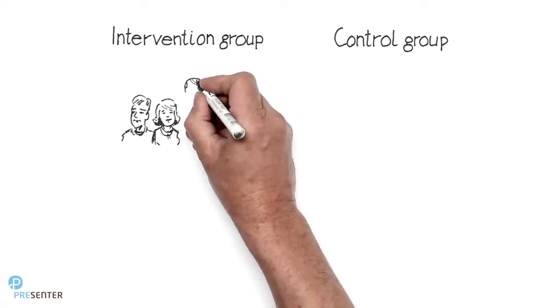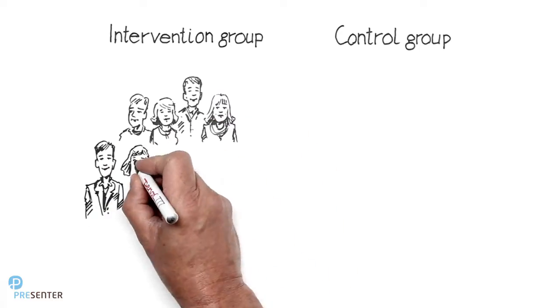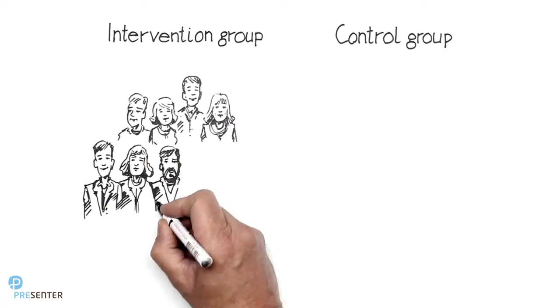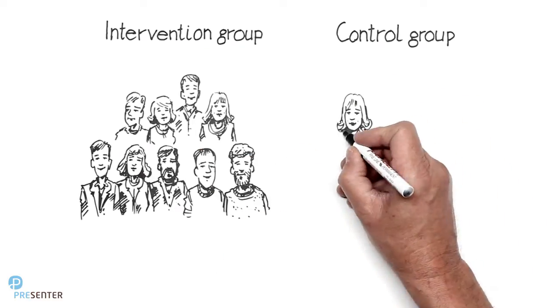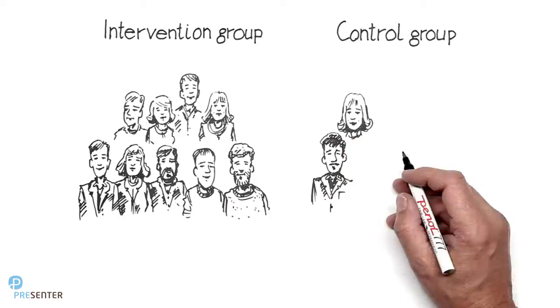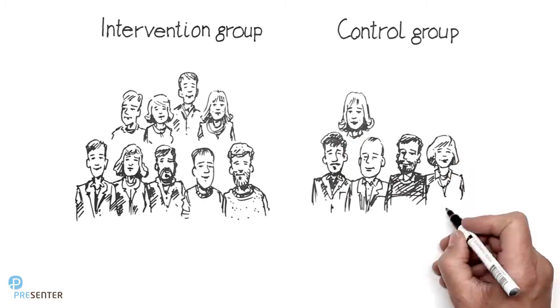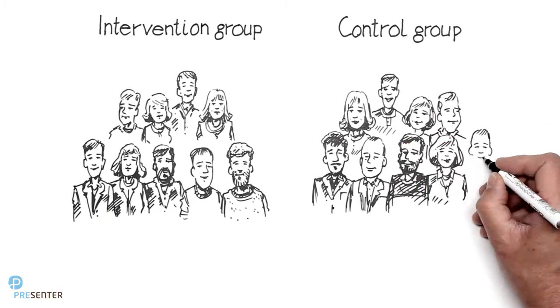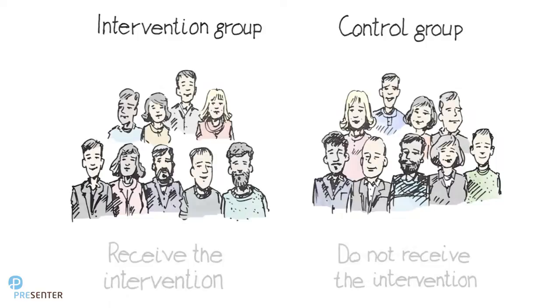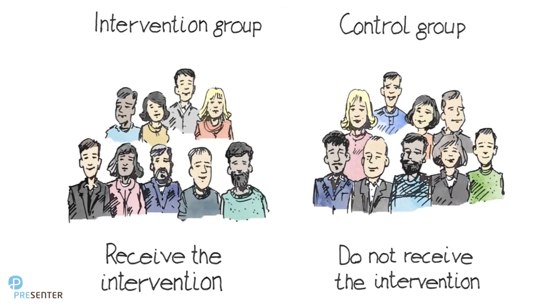Controlled means that there is a control group, which the intervention group is tested against. The control group should be as similar to the intervention group as possible. The only difference is that they do not receive the intervention. However, because the control group also follows the trial, participants often have the impression that they are receiving an intervention and might therefore show an effect of the treatment. This is known as the placebo effect.